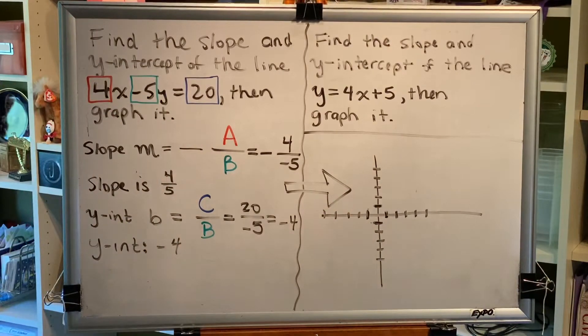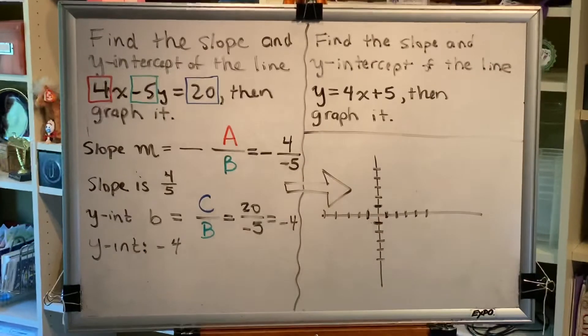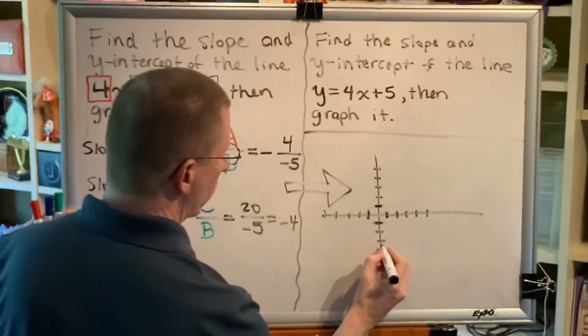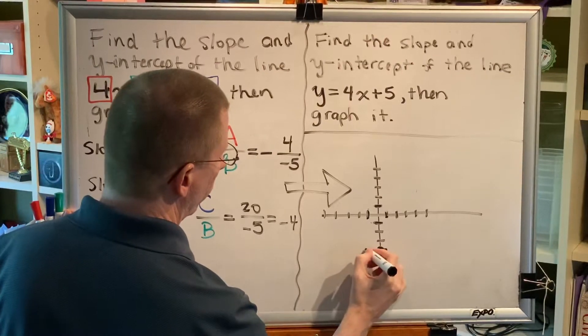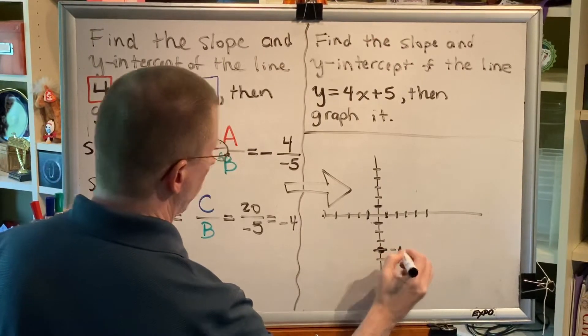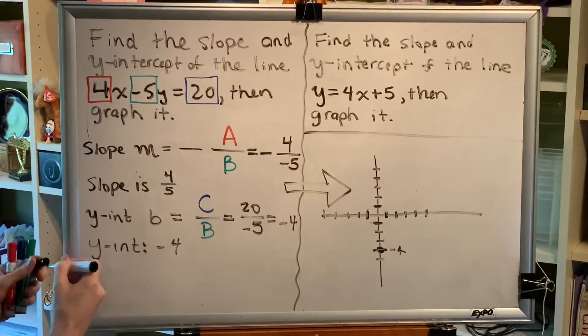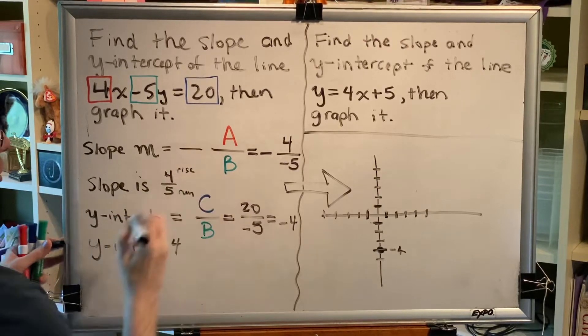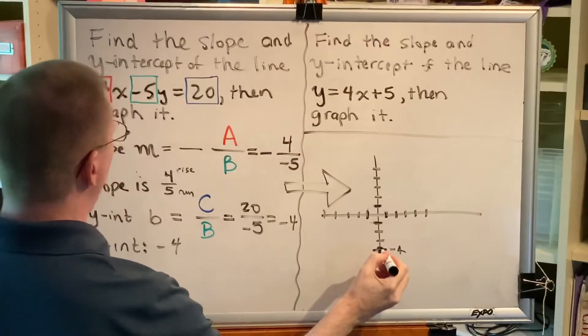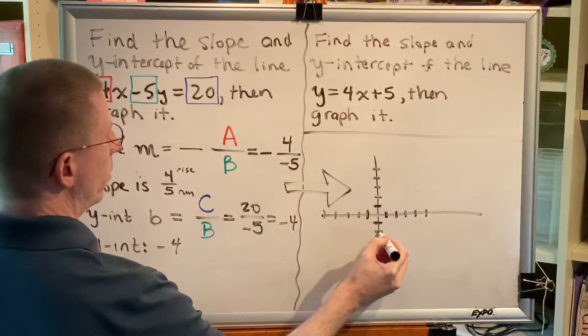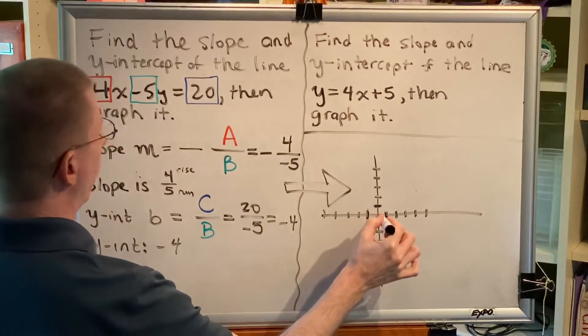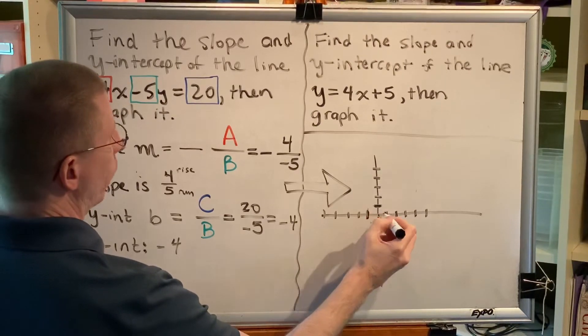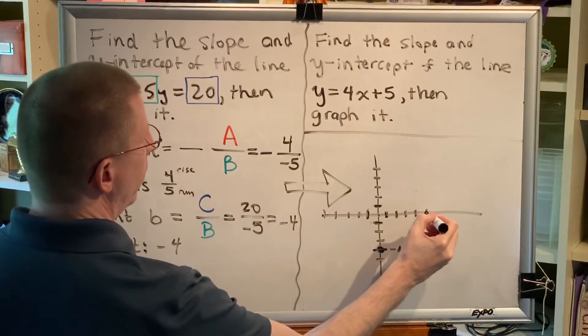Okay, we'll now graph our line. We know that the y-intercept is negative 4. We also know that the slope of the line is 4 fifths, and that slope is rise over run. So, from the y-intercept, rise 4: 1, 2, 3, 4, we're now at the origin, and then run 5 to the right, because it's positive. 1, 2, 3, 4, 5, and put a point.